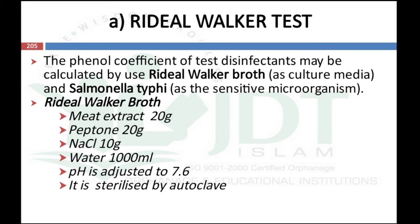In the Rideal-Walker test, the phenol coefficient of the test disinfectant is calculated using Rideal-Walker broth as culture media and Salmonella typhi as the sensitive microorganism. The Rideal-Walker broth is prepared by taking meat extract 20 g, peptone 20 g, sodium chloride 10 g, water up to 1000 ml, adjusting pH to 7.6, and sterilizing by autoclave to ensure no presence of other microorganisms.